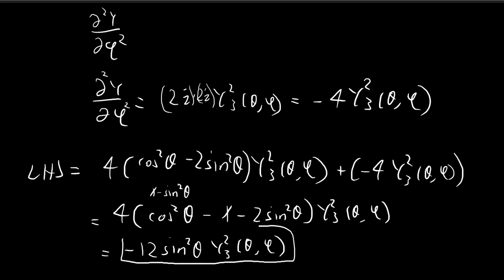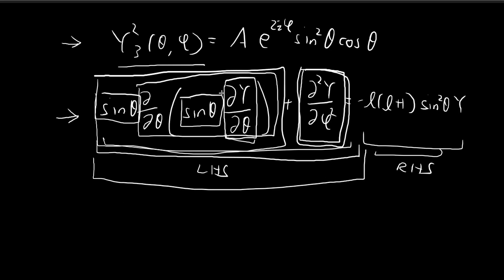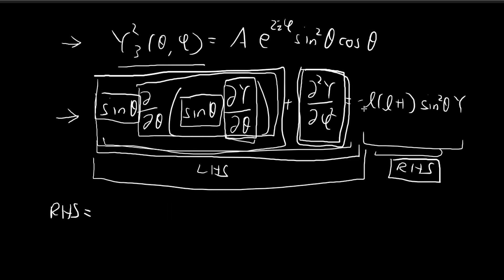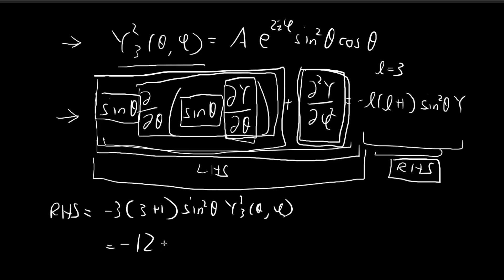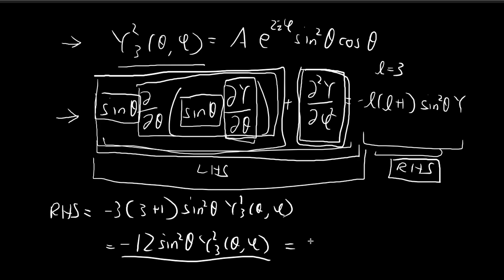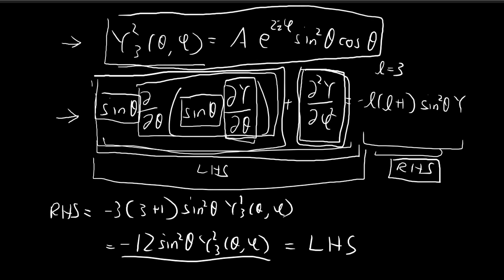This expression is the left-hand side of the differential equation. Now for the right-hand side: with l = 3, the right-hand side is −l(l+1) sine squared theta · Y = −3 × 4 × sine squared theta · Y₂³(θ,φ) = −12 sine squared theta · Y₂³(θ,φ). This is exactly equal to our left-hand side expression, confirming that the left-hand side equals the right-hand side. We have verified that this function is indeed a solution to this differential equation.